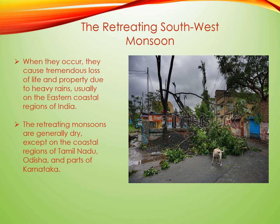Cyclonic winds, when they occur, cause tremendous loss of life and property due to heavy rains in coastal areas, usually on the eastern coastal regions of India. Retreating monsoon rainfall in some places is as heavy as the summer monsoons. Interior parts of the Deccan remain dry because they lie in the rain shadow of the Eastern Ghats. The retreating monsoons are generally dry except on the coastal regions of Tamil Nadu, Odisha, and parts of Karnataka.